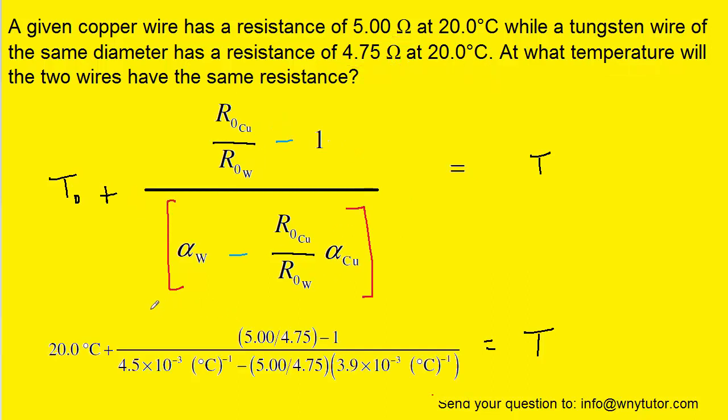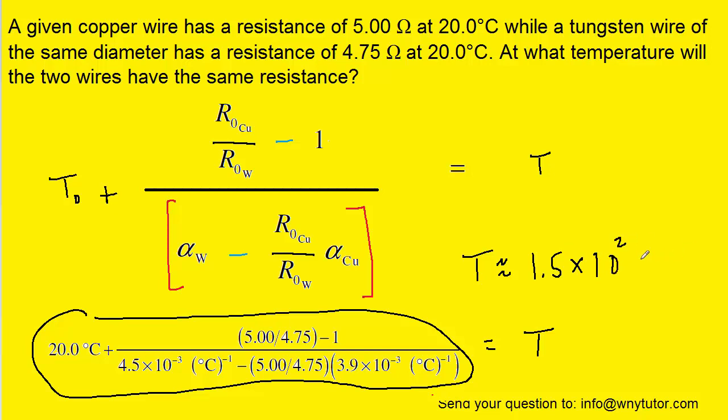So here are all the known values plugged in. You probably want to pause the video and just confirm that all the numbers went in their respective places and that it makes sense. But when we crunch down this entire quantity on our calculator we should get approximately 1.5 times 10 to the power of 2 degrees Celsius. And that will indeed be the temperature at which these two wires have the same resistance.